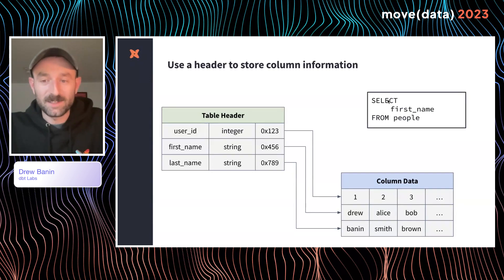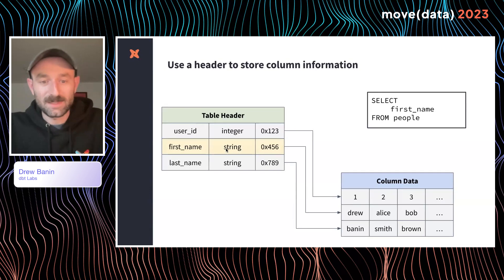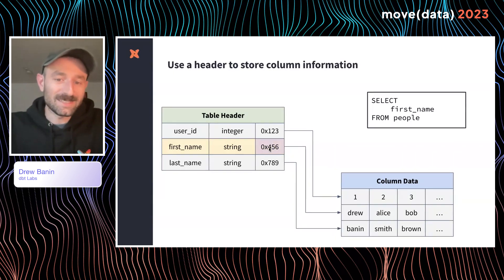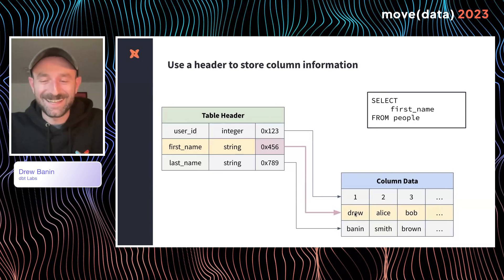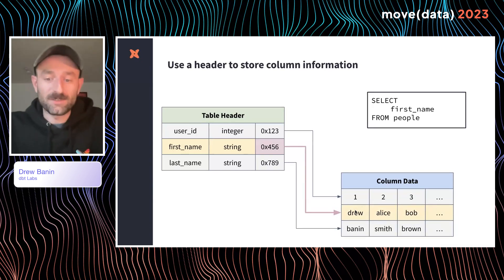Here we've got our same query — select first name from people. We can see that in the table header there's a first name column of type string, and a pointer into the data for that column. We follow this pointer — 0x456 — which points into a segment of the data. We can traverse this pointer to see the column data: Drew, Alice, and Bob. In this way, we can read the entire header but only read segments of the column data, optimizing the amount of data we read and thus optimizing the performance of the query.